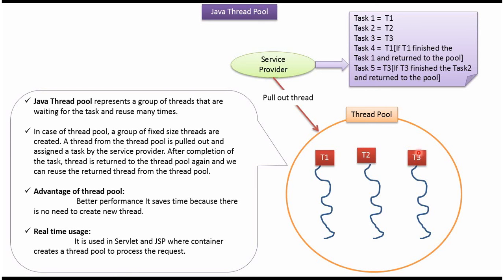Suppose there are 1000 tasks to finish — then these 3 threads are responsible to finish all 1000 tasks. Similarly, if there are 5 tasks to finish, then these 3 threads are responsible to finish those 5 tasks.